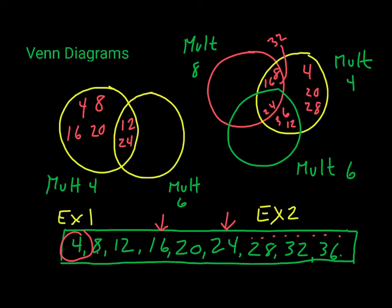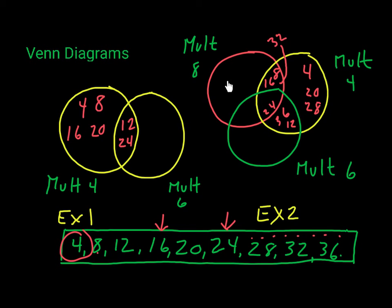The Venn diagram is now filled in. You'll see there are no numbers that are exclusively multiples of eight and six with no connection to four — they're all connected in some way to multiples of four. The numbers appearing only on the four times table are listed on the left. 36 and 12 appear on both the six and four times tables. 16, 8, and 32 appear on both the eight and four times tables. The only number appearing in all three times tables is 24 — it's a multiple of six, four, and eight. And that's how Venn diagrams work!